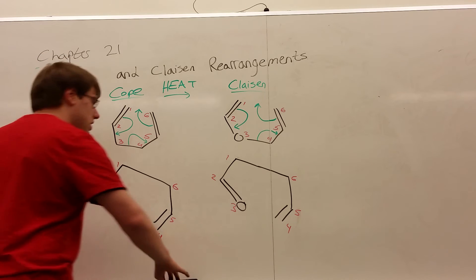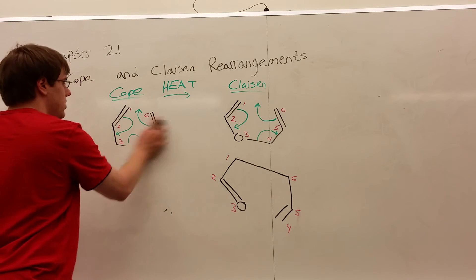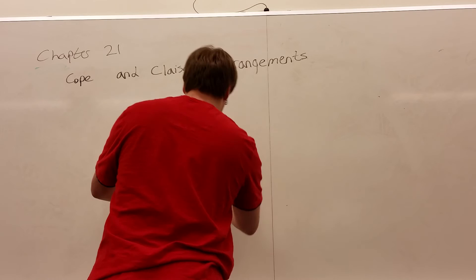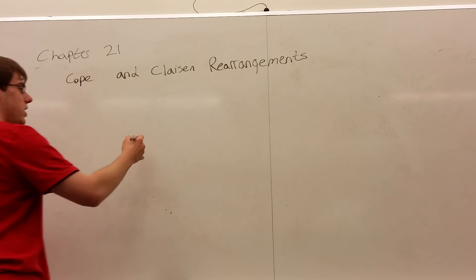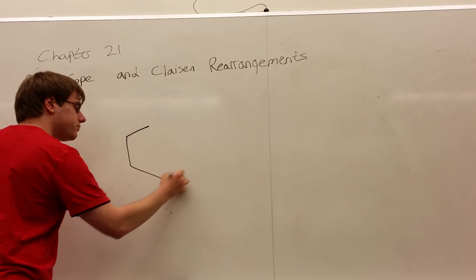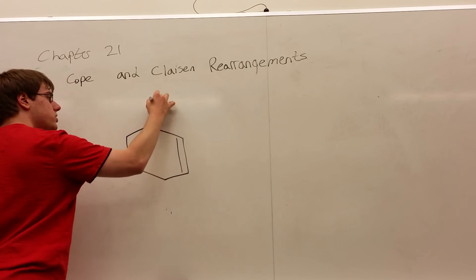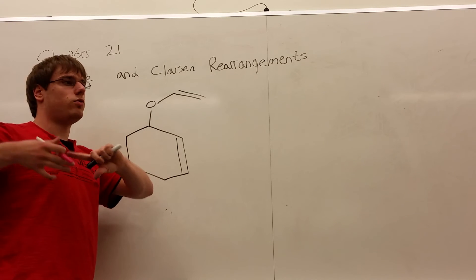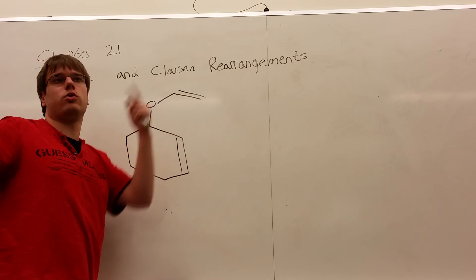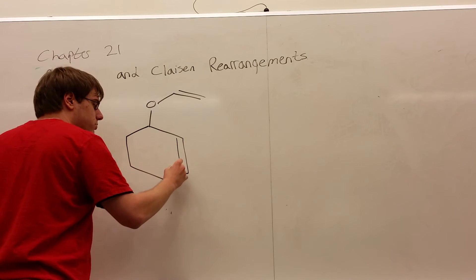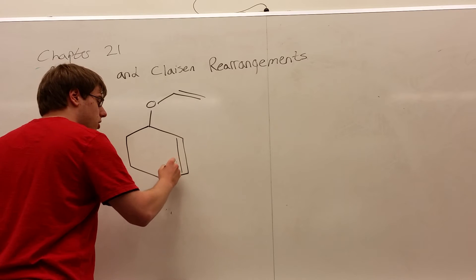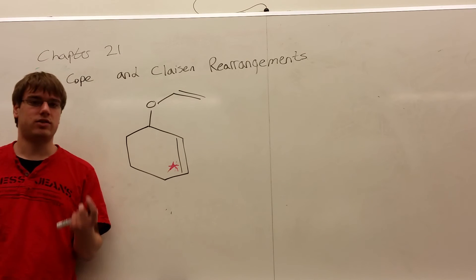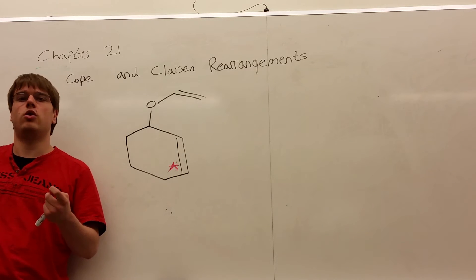Now let's do a practice problem that covers this idea of keeping track of your carbons. A lot of the Cope and Claisen rearrangement questions you're going to get will look something like this: a six-membered ring with a double bond, an oxygen, and another double bond, and they're going to say this specific carbon was radiolabeled using C-14 isotopes or something of that nature. Basically, they put a little star on a carbon — that's your favorite carbon, the one you want to make sure you know where it ends up. It doesn't change how anything reacts; it's just saying they highlighted this carbon so make sure you know where it goes.